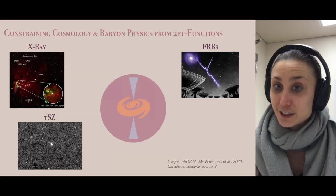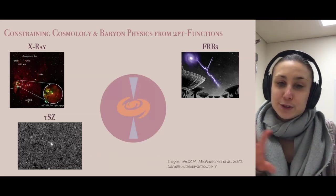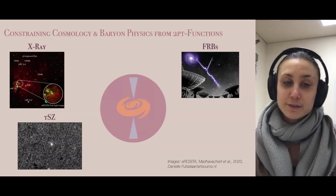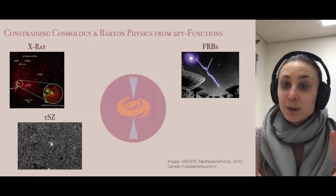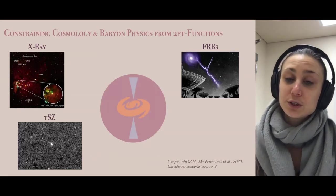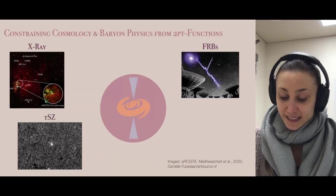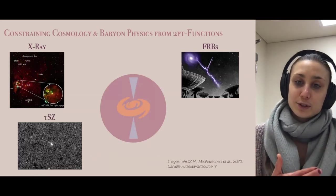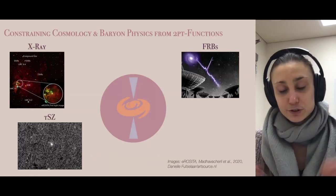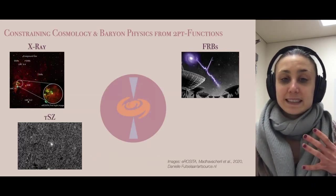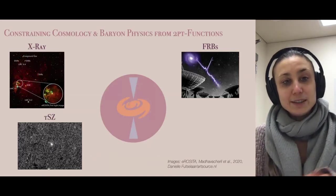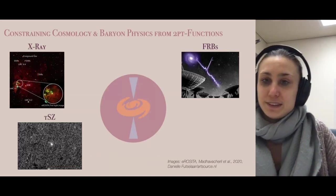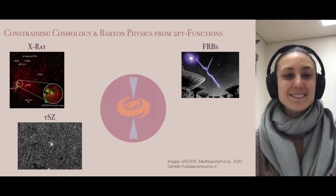Finally, there's a novel probe of the baryon distribution that has recently been emerging: fast radio bursts. In our work, we chose not to focus on one of these observables in particular, but to take a step back and focus on a theoretical quantity that underlies some of these observables — the electron density power spectrum P_ee. The basic question we wanted to ask is: how well can we actually constrain both cosmology and baryonic feedback from this electron power spectrum?